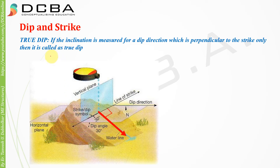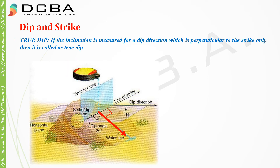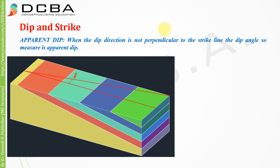Dip is divided into two parts: true dip and apparent dip. True dip is when the inclination is measured in a dip direction that is perpendicular to the strike. If the dip direction is taken perpendicular to the line of strike, that is called true dip. If the dip direction is at any other angle, not 90 degrees to the strike, that is called apparent dip.